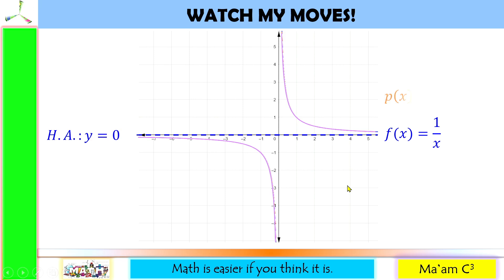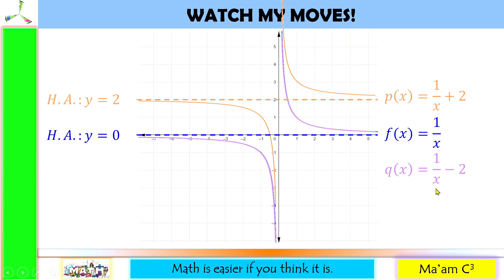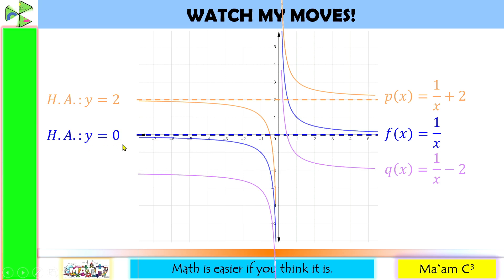Now what if we have p(x) = 1/x + 2? The only difference is the additional plus 2. This graph will now move two units up, so the horizontal asymptote y = 0 will also move to y = 2. What if we have q(x) = 1/x − 2? The original function will now move two units down, so the horizontal asymptote also moves two units down, and its equation becomes y = negative 2.